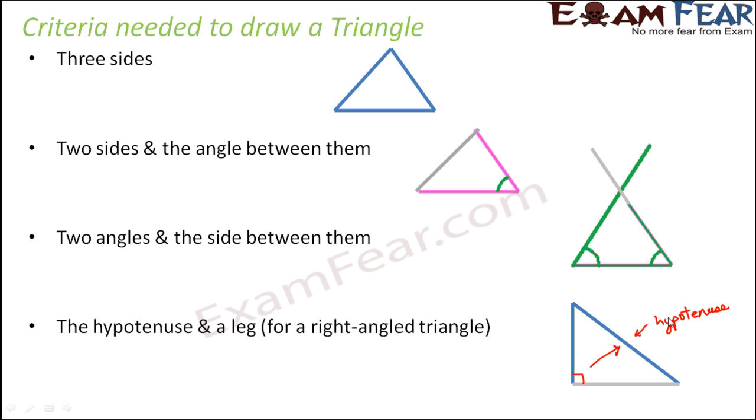So to draw a right angle triangle, if you know the length of the hypotenuse and any one leg, you can draw the triangle.